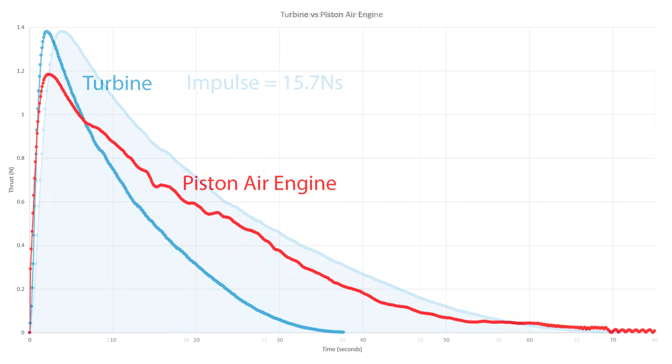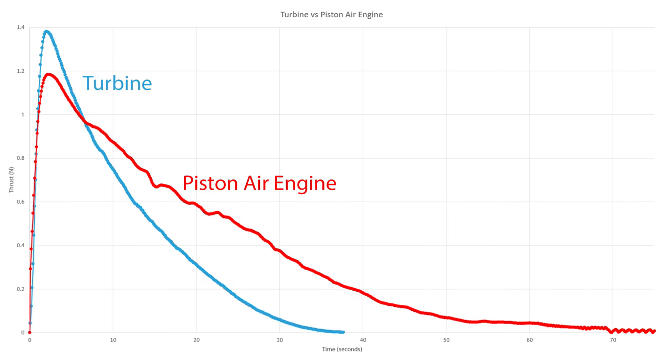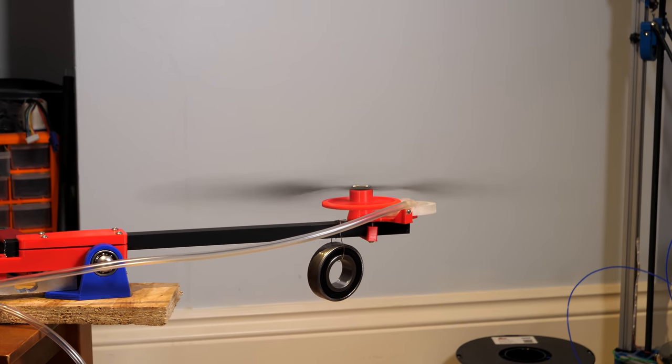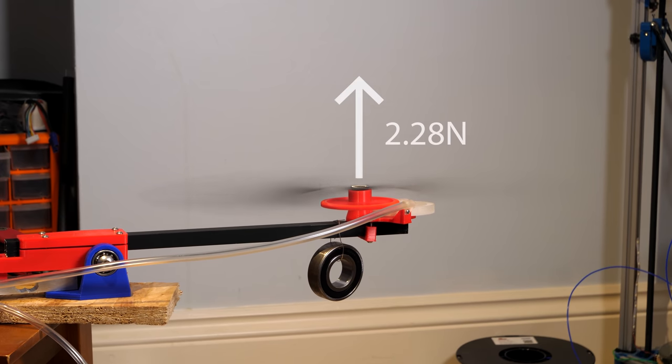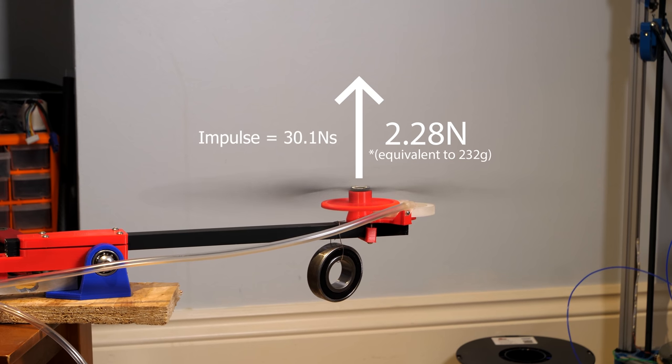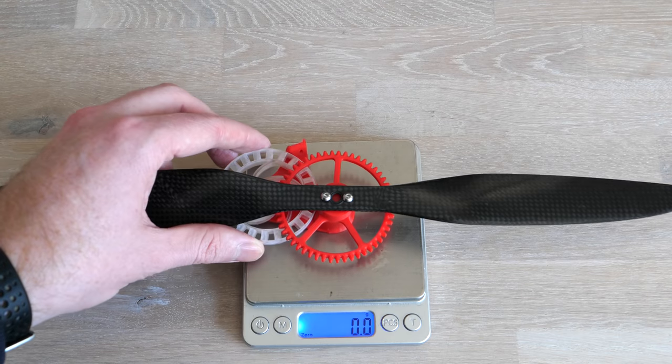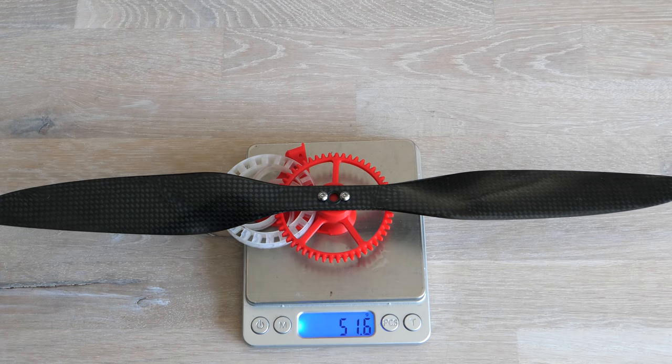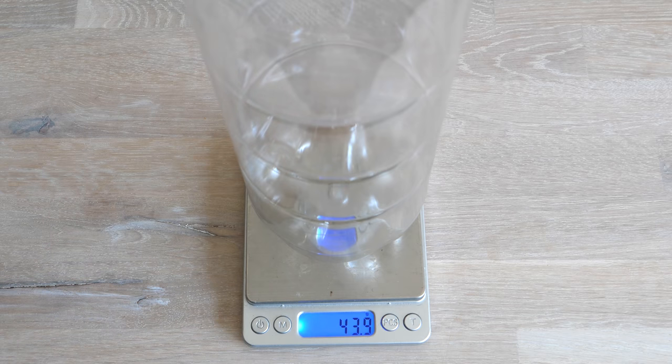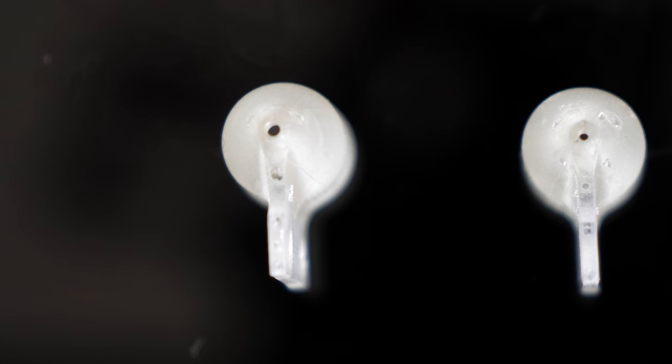In comparison to my piston air engines, the turbine produces a higher peak thrust but the efficiency is quite a bit less, at least at these lower pressures. This test was performed at 6.9 bar of pressure and almost maxed out my thrust test stand at 2.28 newtons, which is equivalent to lifting a 228 gram mass, which is impressive considering the turbine weighs just 51.6 grams. Including the plastic bottle totals to 95 grams, meaning the thrust to weight ratio is 2.4, and we can easily adjust the performance of the turbine by just changing the nozzle diameter.